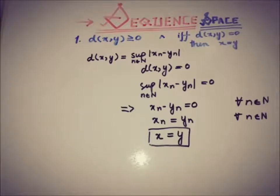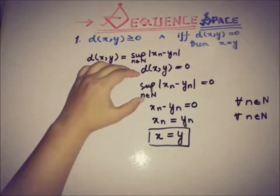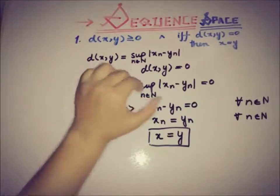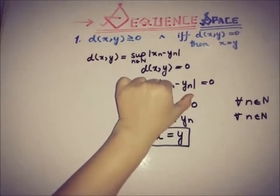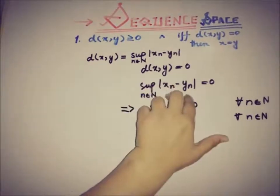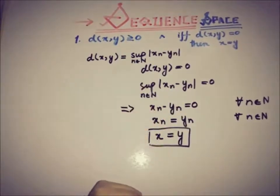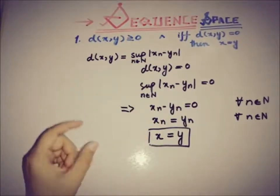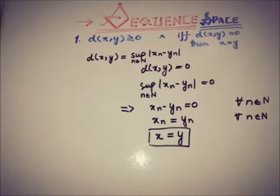This is also true in the converse way: if x equals y, then the supremum of the term-wise difference of the two sequences must equal zero. So the first condition is satisfied.